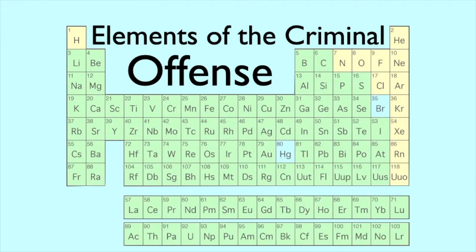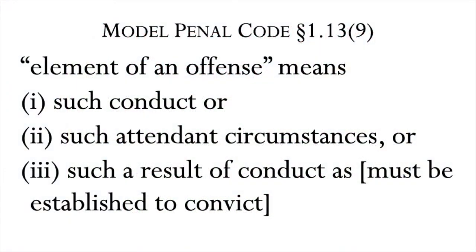This is not always necessary to do — the facts of particular cases will determine whether this exercise has a point or not. Let's look at what these three types of element are. Elements of an offense mean such conduct, or such attendant circumstances, or such a result of conduct, as must be established to convict: conduct, attendant circumstances, result.